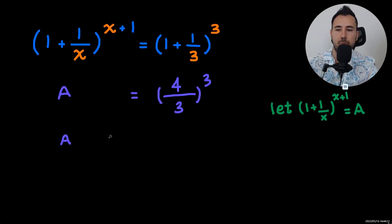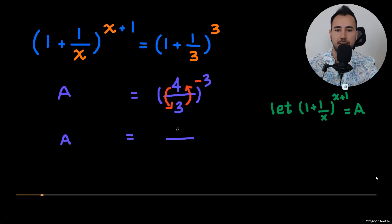This is an important step. We're going to flip three by four and we're going to give a negative value to the exponent. So we're going to have three over four to the power of negative three.